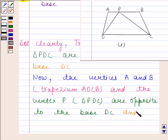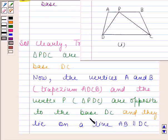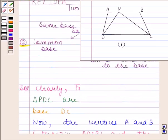And these vertices lie on a line AB which is parallel to the common base DC. So this verifies point B.